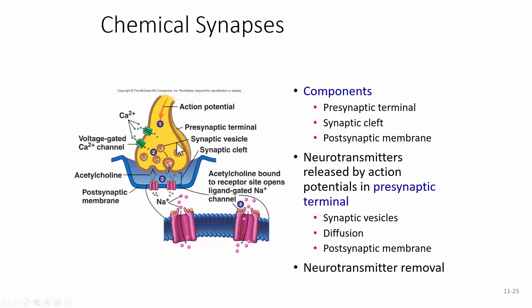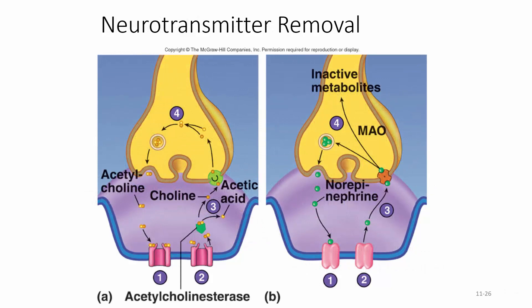In a chemical synapse, the components are the pre-synaptic terminal, the synaptic cleft (the gap), and the post-synaptic membrane. Neurotransmitters are released by action potentials in the pre-synaptic terminal from synaptic vesicles, diffuse across the cleft, and bind to receptors on the post-synaptic membrane. To stop this action, we need a way to remove the neurotransmitter — one way not listed is diffusion, where excess neurotransmitter simply diffuses away.